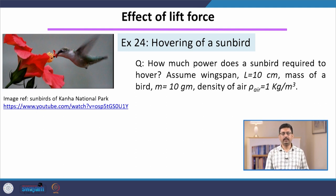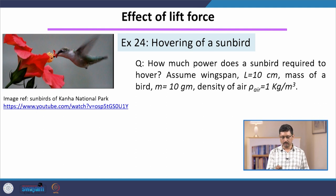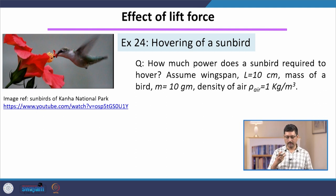The goal of this example is to understand how the bird does that. To make things concrete, here is a question: how much power does a sunbird require to hover? We assume certain parameters about the bird. These parameters are a bit of guesswork — they can be off by a factor of 1 or 2 — but our goal is to get a quantitative estimate, a numerical feel about the problem.